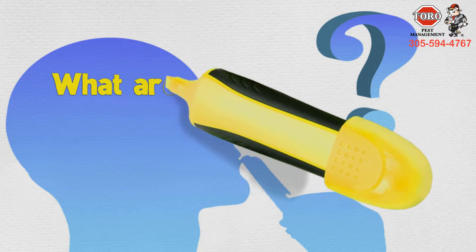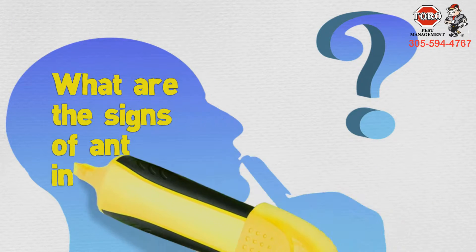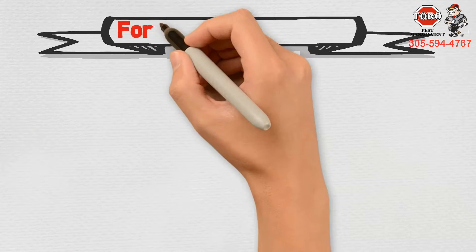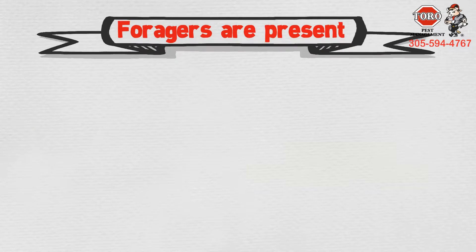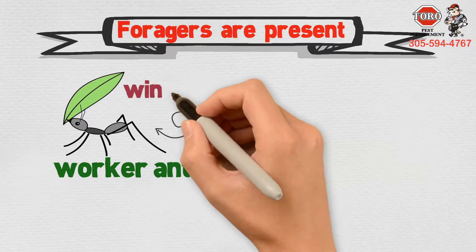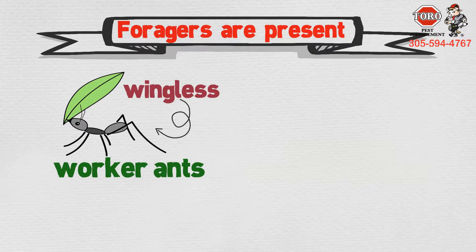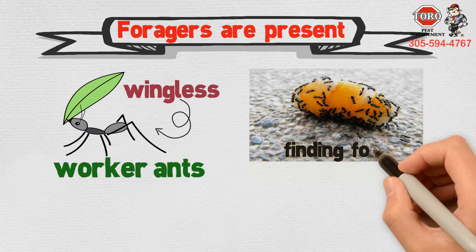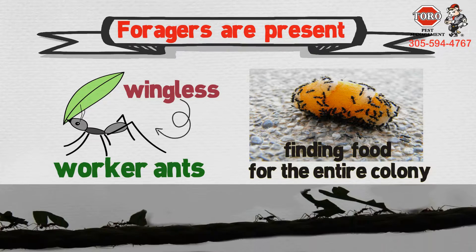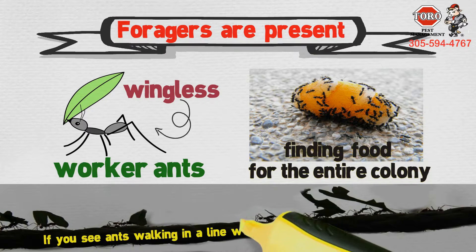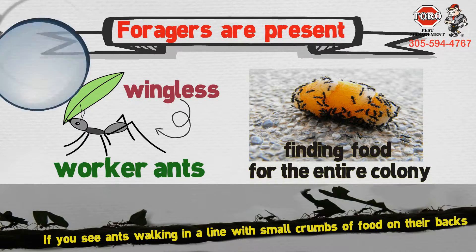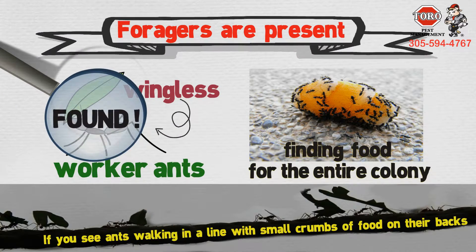What are the signs of ant infestations? The most common sign is that foragers are present. These are the worker ants, which are usually wingless, with the responsibility of finding food for the entire colony. If you see ants walking in a line with small crumbs of food on their backs, then you have just found the foragers.